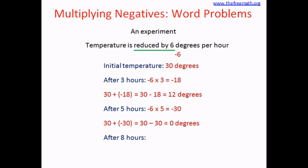After 8 hours, multiply negative 6 by 8. 6 eights are 48, so the product is negative 48. Starting at 30, we get 30 plus negative 48, which equals 30 minus 48. To add one positive and one negative number, ignore the signs, subtract the smaller from the bigger — 48 minus 30 is 18 — and the answer takes the sign of the bigger number, which is negative. So the answer is negative 18 degrees. Starting at 30°C and reducing by 6°C every hour, after 8 hours the temperature is negative 18 degrees.